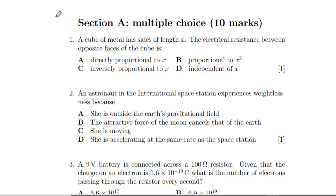A cube of metal has sides of length x. The electrical resistance between opposite faces of the cube is proportional to something to do with x. We've got resistance is resistivity times length divided by area, rearranging what you might be more familiar with. That will be resistivity times x divided by x squared, so we've got inversely proportional to x, which is C.